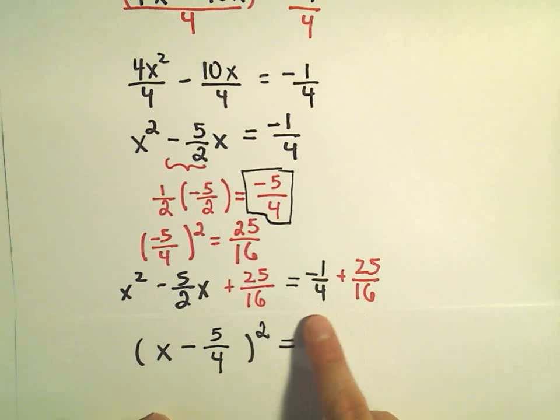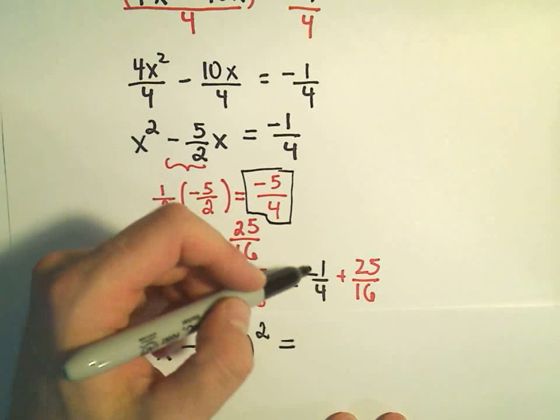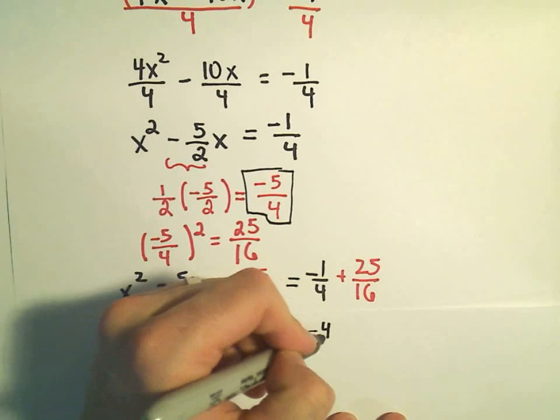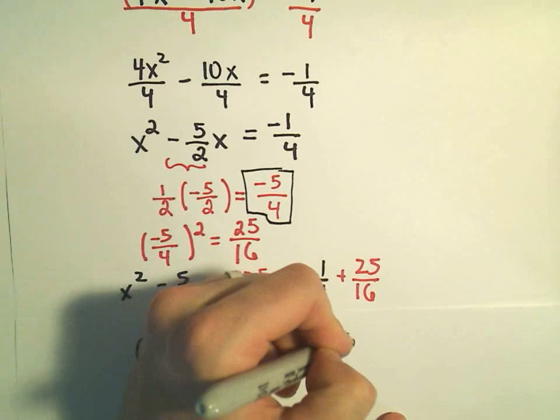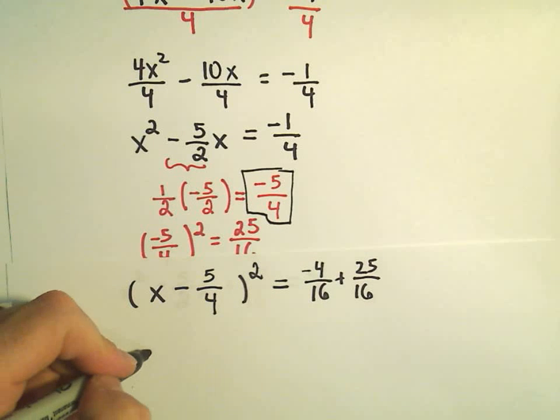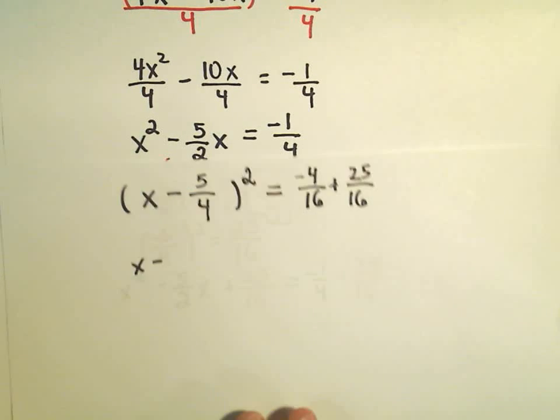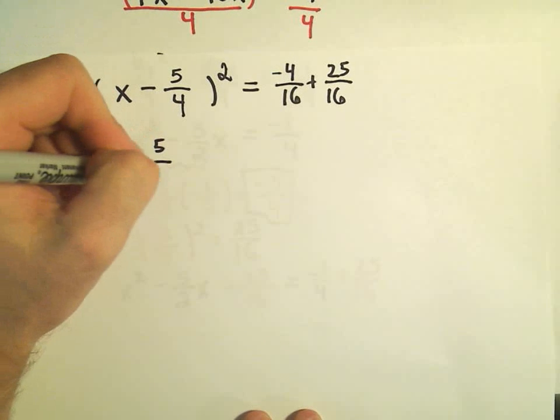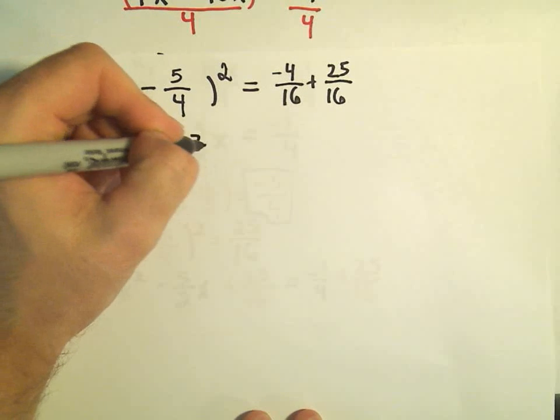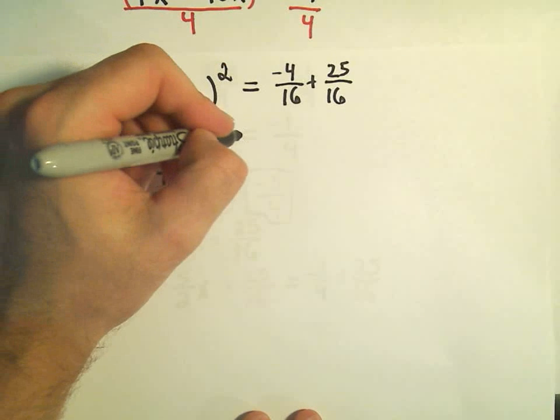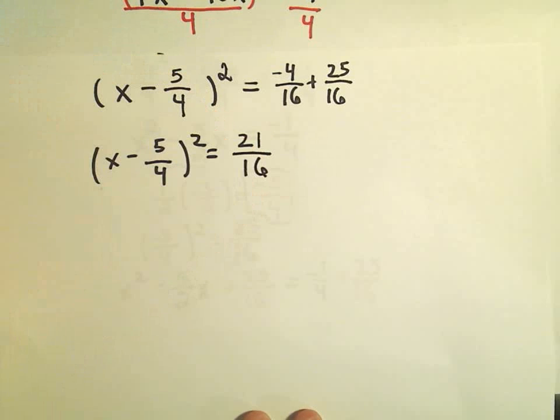On the right side, we need to get common denominators to simplify our fraction. So I would have to multiply top and bottom of the first fraction by 4. So that would give me -4/16 + 25/16. Okay, so I'm going to leave the left side alone here for just a minute. So x - 5/4 quantity squared. So we've got common denominators. -4 + 25 will give us 21/16.